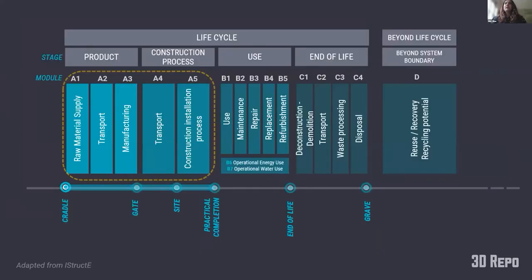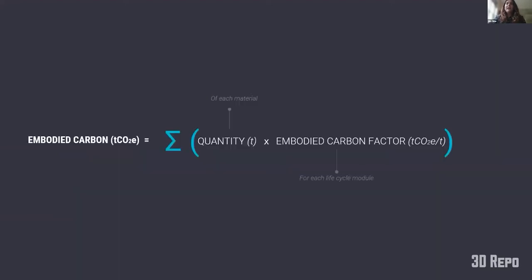After picking your tools, you need to define the system boundary. As best practice, life cycle stages A to D and beyond are ideal, but most commonly people have data for A1 to A5 — that's cradle to practical completion including transportation. The basic formula for life cycle assessment: the carbon factor is given, while the quantities are obtained from your own calculations. There are some gaps, but the fundamental principle is straightforward.